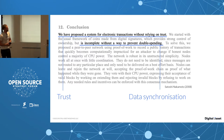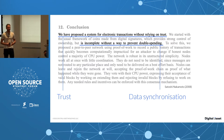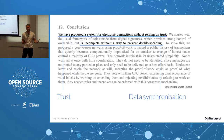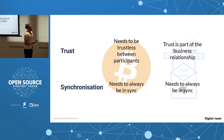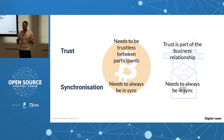His second key point is around data synchronization — he says it's incomplete without a way to prevent double spending. If you transfer money and it transfers twice, or you sell something and don't receive payment, you have a problem. So he talks about trust and the need to synchronize data. In enterprise IT, we believe data synchronization is actually the more interesting challenge, rather than removing trust.